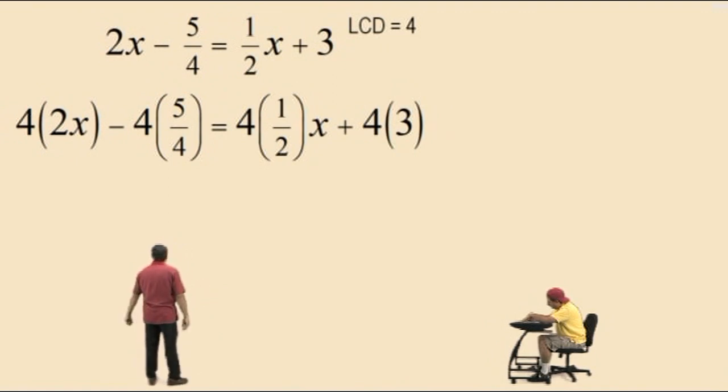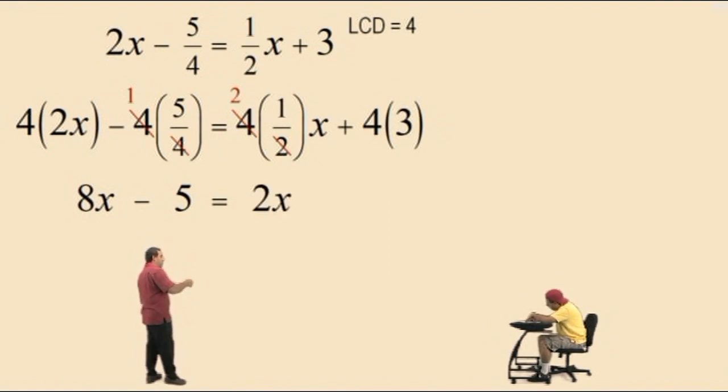Now, Charlie, what's 4 times 2x? 8x. That's right. Subtract. What's 4 divided by 4? 1. And 1 times 5 is? 5. 5. Okay, bring down your equal sign. Go to the right-hand side. What's 4 divided by 2? 2. And 2 times 1 is? 2. Don't forget, it's 2 times x, right? Okay. And then we have a plus 12. Now, let's go ahead and put our work up there.